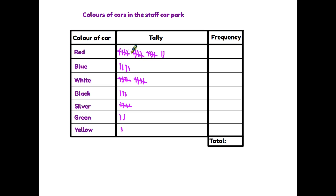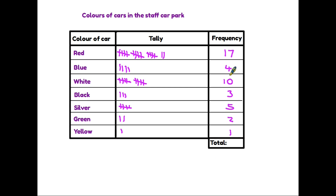Red we said was five, ten, fifteen, sixteen, seventeen — and the number goes in the end column. Blue there were four cars. White there were ten. Black was three. Silver was five. Green was two and yellow was one. We then add up the total number of cars, which comes to 42. That is a completed frequency table. A tally chart is the raw information you counted in the car park; a frequency table is the same thing but with the numbers added up in a final column and a total recorded.